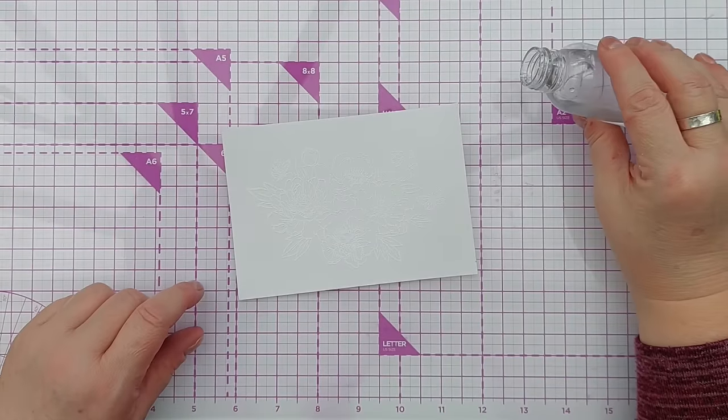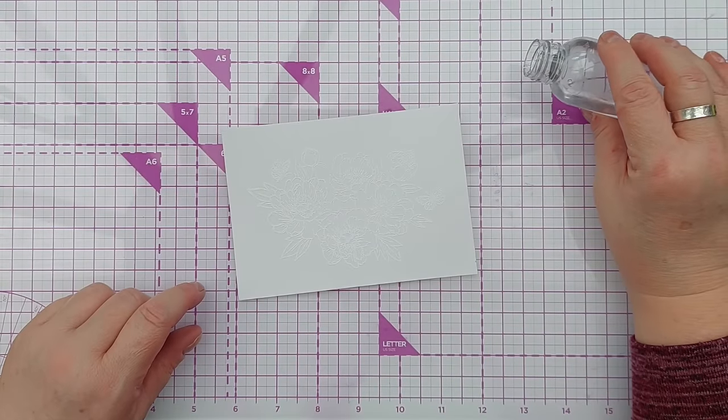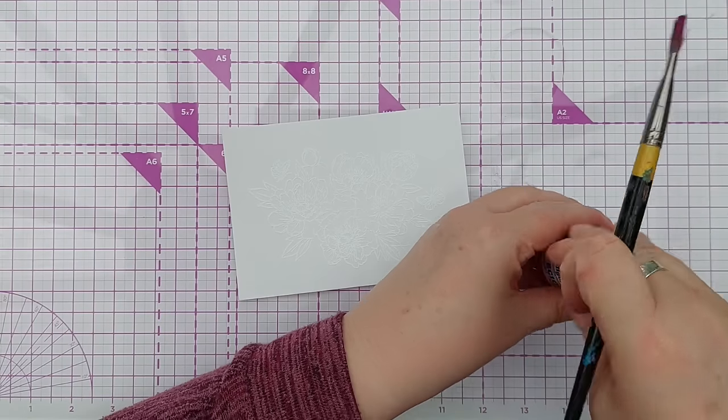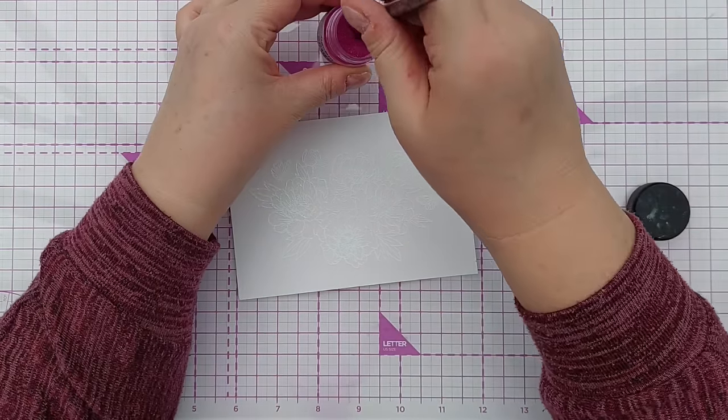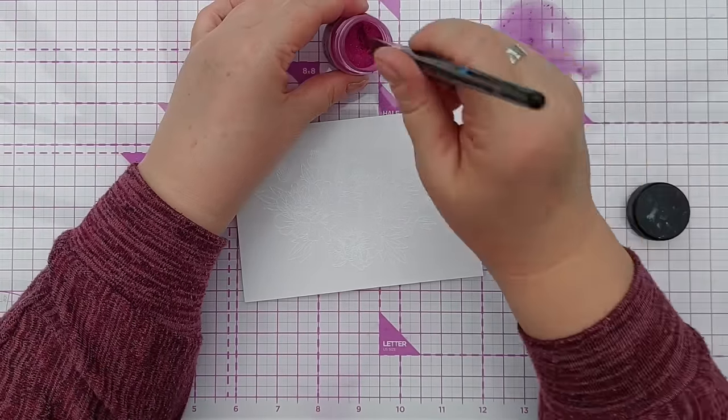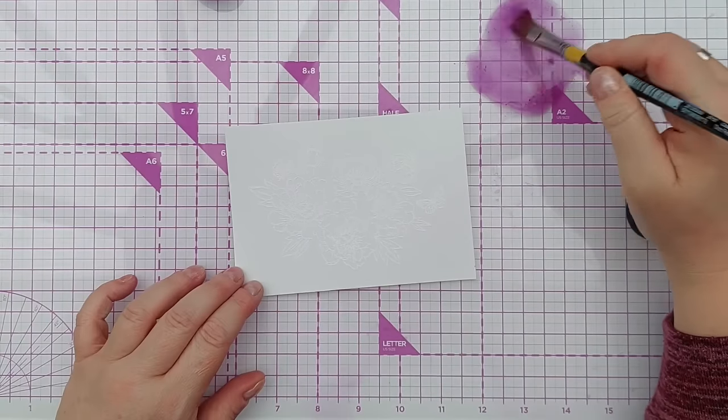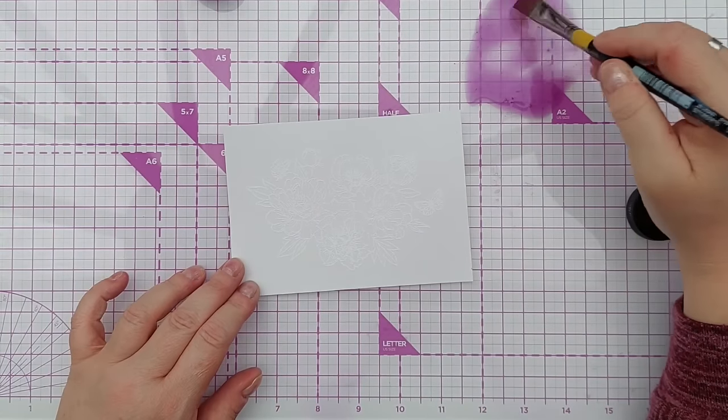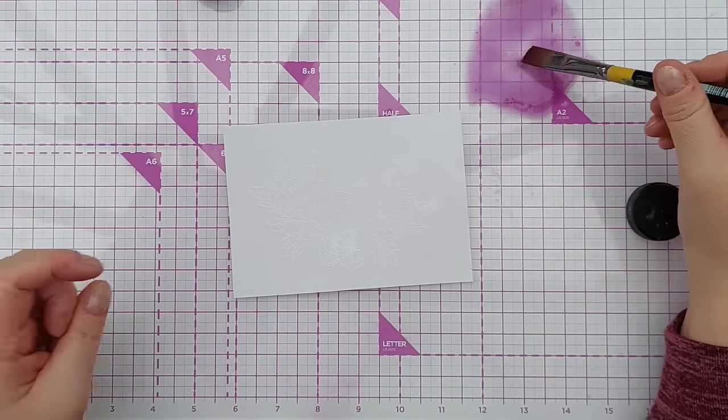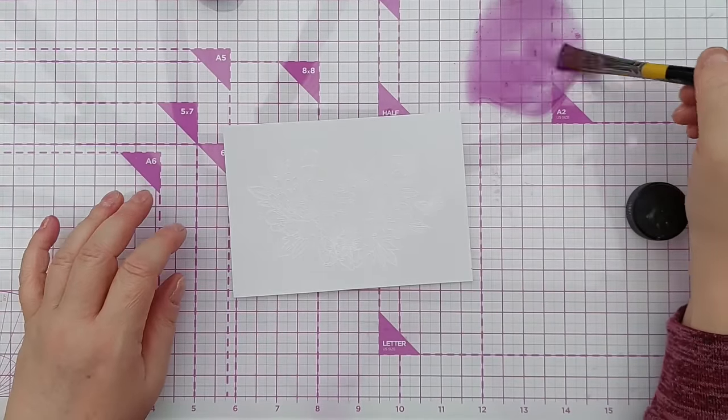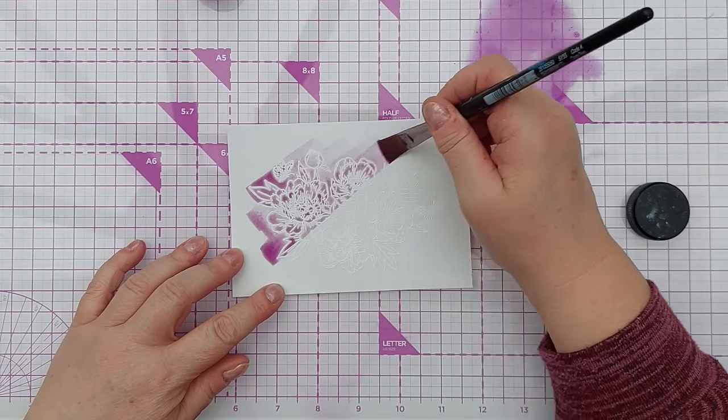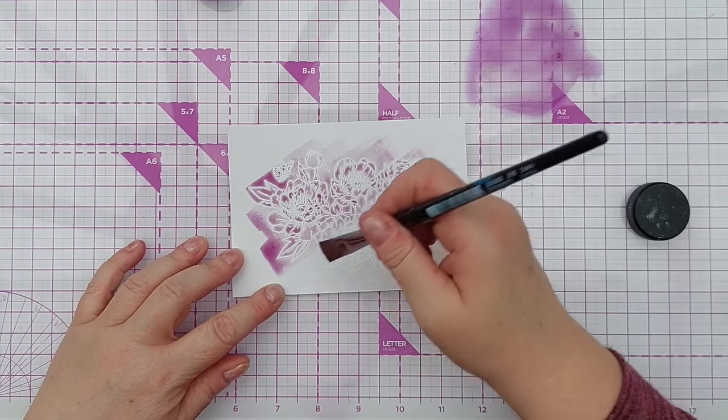And now that is cooled and set, I'll put some water on my mat, take some magenta. This is the Raspberry Jam pigment powder. You can obviously ink blend over this, you can smoosh over it, you can swipe an ink pad over it, or you can paint over it with paint that you've made from pigment powders.